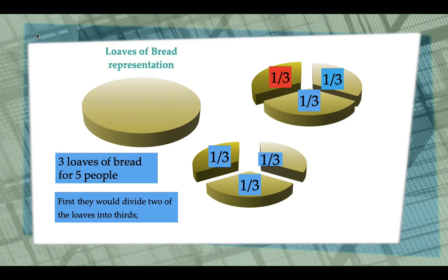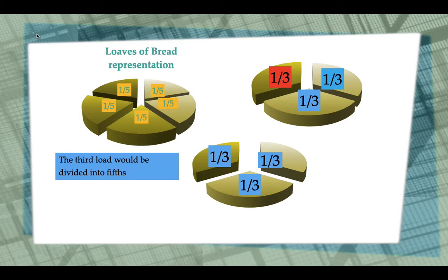Each person gets 1/3 each with 1/3 left over. The third loaf will be divided into fifths. Each person gets 1/5 each.